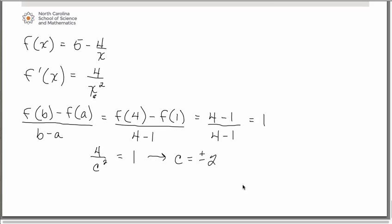But remember that the interval we were concerned with was the interval from 1 to 4. So only positive 2 lies in there. So positive 2 is the only c value in this scenario that will fulfill the criteria for the mean value theorem.